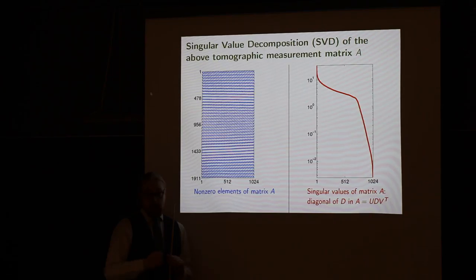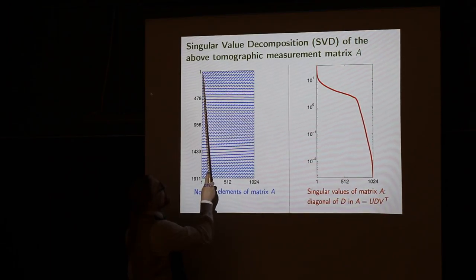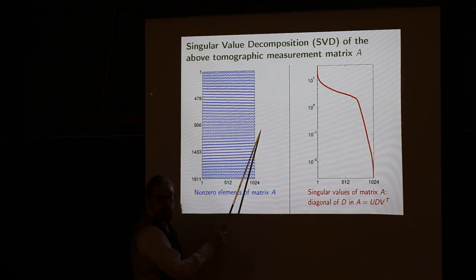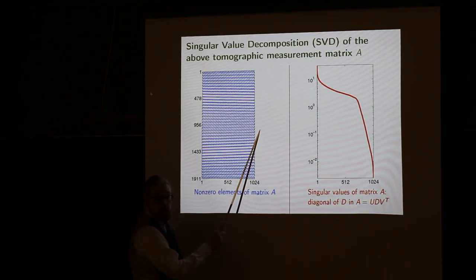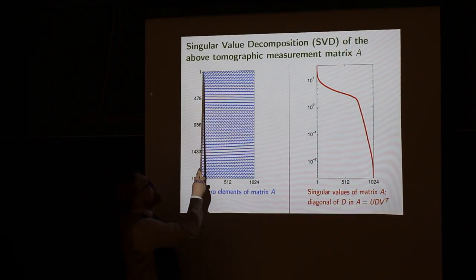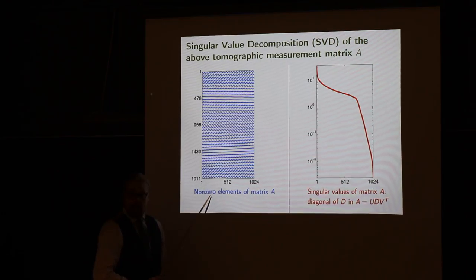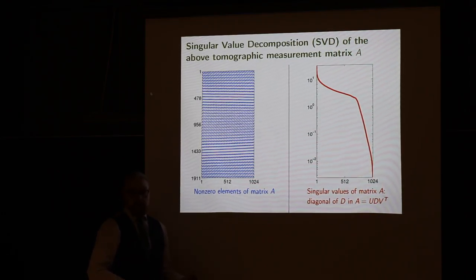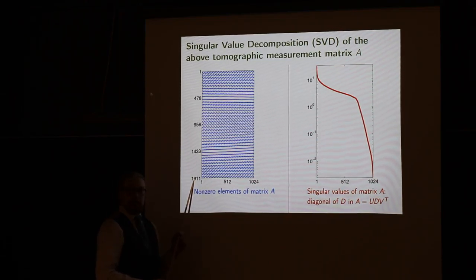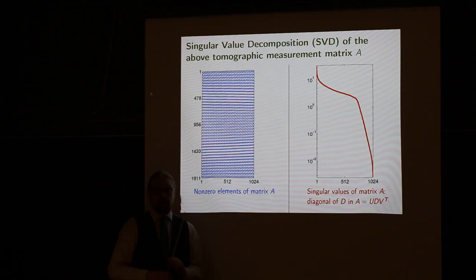So we have M equals AF, and F is a 32 by 32 pixel image, so F has 1024 elements. So this matrix has 1024 columns, it's multiplying a vector that has 1024 elements. And the result of the multiplication will have as many components as there are rows in this matrix, and that's the size of the measurement M. So the M-vector has 1911 entries, and the F-unknown has 1024 entries.